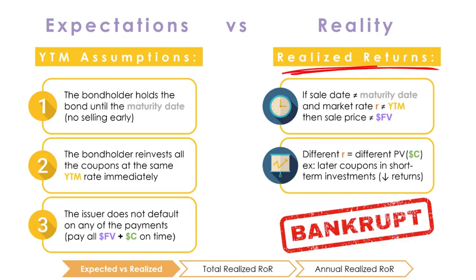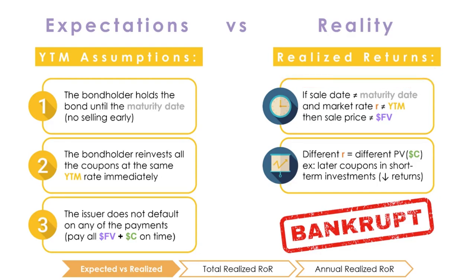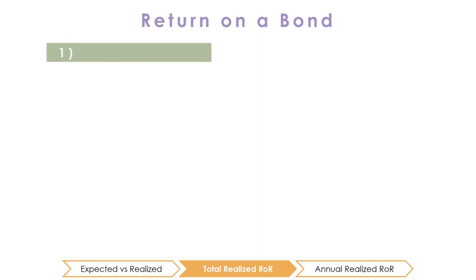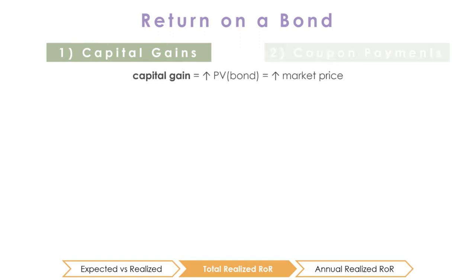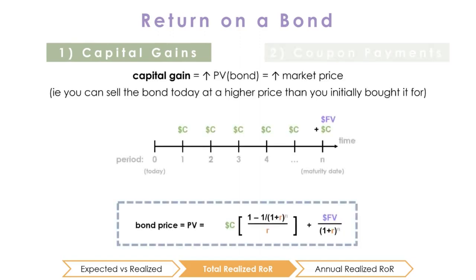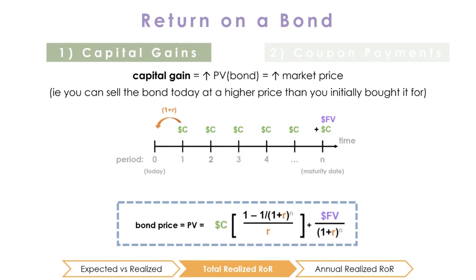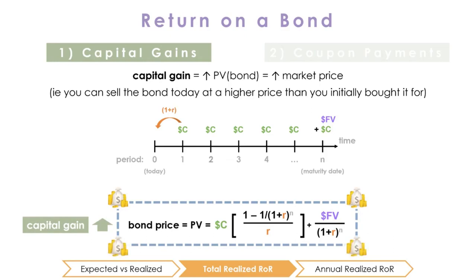Sometimes we want to know our realized return in order to evaluate the actual success of an investment. In order to calculate our realized return, we have to understand the two components that make up the return of a bond: capital gains or losses, and coupon payments. We earn a capital gain on a bond when its present value, or market price, goes up. From the present value of an annuity formula, we can see that when the market interest rate falls, the coupons are not being discounted as much, which makes the present value, or price, of the bond higher, meaning we can sell at a higher price than we expected.